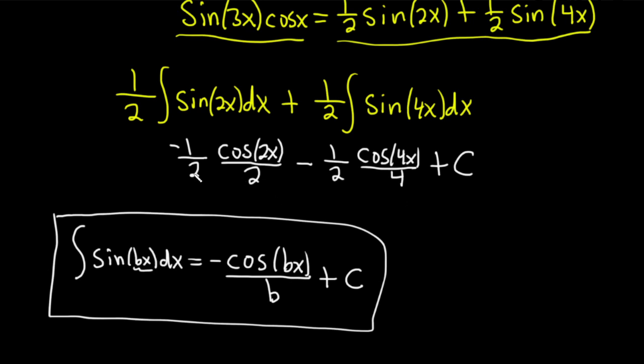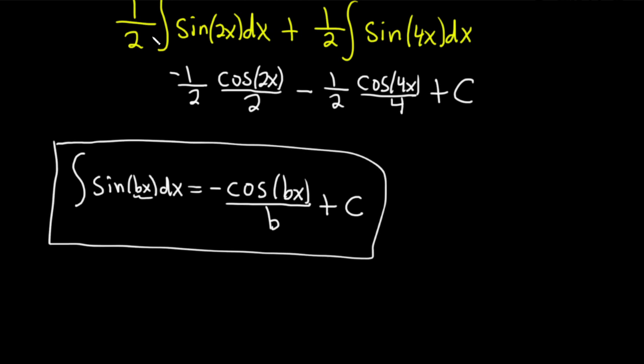Lastly, we can just multiply here. So 2 times 2 is 4. So it's going to give us a negative 1 fourth. I'm going to come down here and write the final answer. So all of this is equal to negative 1 fourth cosine of 2x minus 1 eighth, because 2 times 4 is 8, cosine of 4x. And then we have capital C, which is our constant of integration.